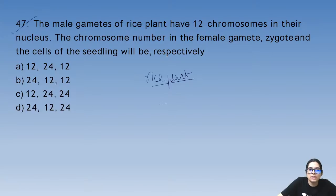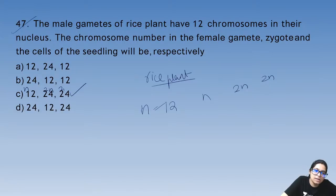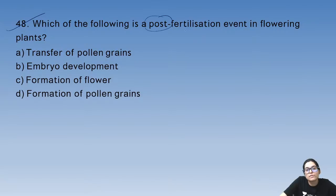Question 47: male gamete of a rice plant has 12 chromosomes. The female gamete will also be haploid (12), while the zygote and seedling will be diploid. The answer is C.